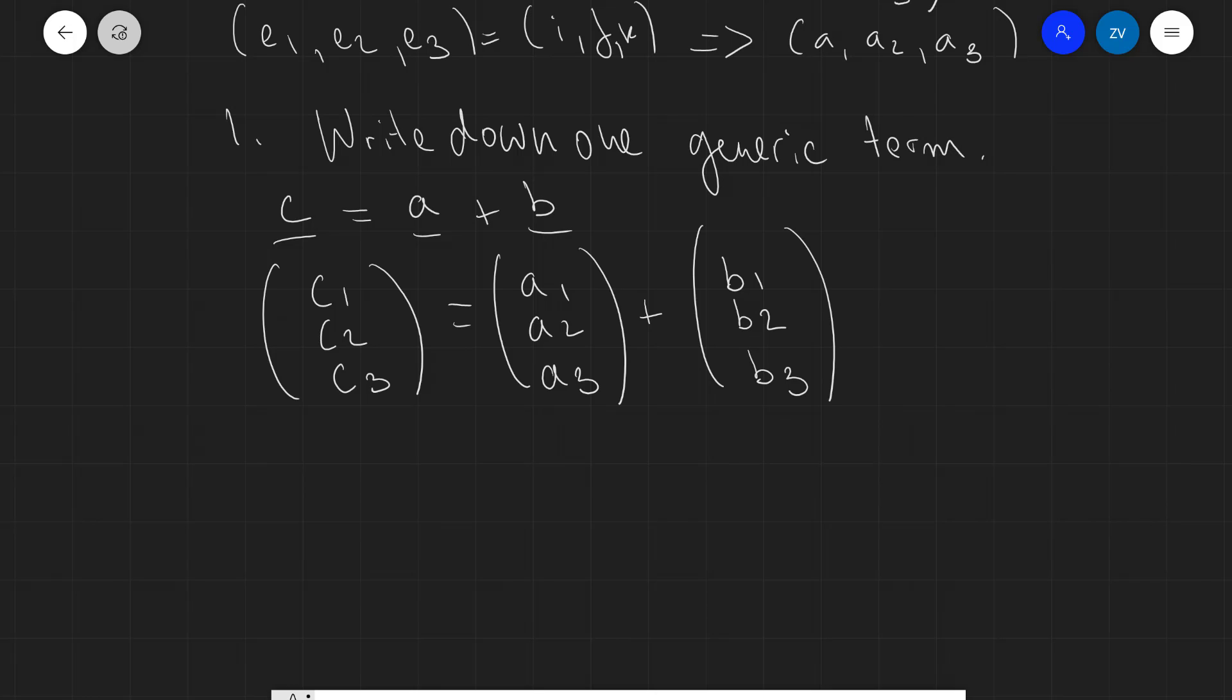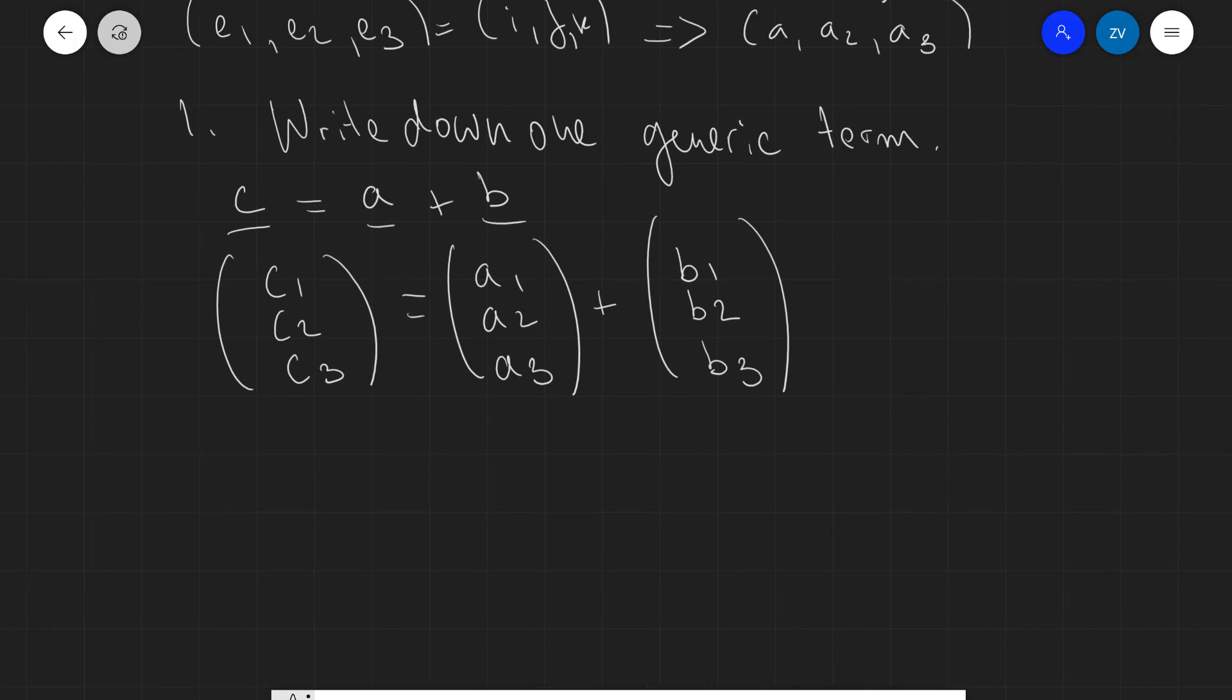Well, this can actually be expressed or summarized as the generic vector i, let's say cᵢ, is equal to aᵢ plus bᵢ. So, all this means is, one way of writing this is essentially writing that cᵢ.